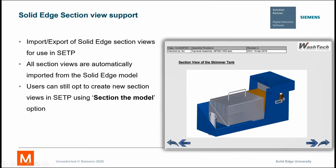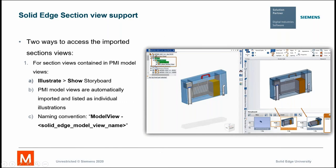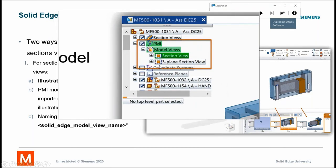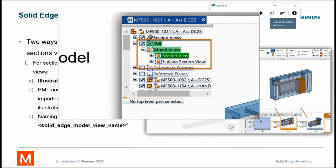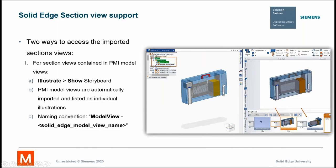Something relatively new is the ability to get section views in SETP — that's Solid Edge Technical Publications. These section views are created automatically when you bring the model in from Solid Edge. There are a couple of different ways to import these. You can do the illustrate show and show the storyboard. The PMI model views also come in. If you have section views described or saved in your Solid Edge models, those come across into technical publications.